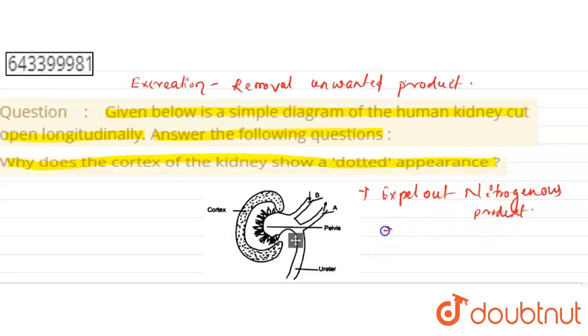And another function is it helps in osmoregulation. So here the question is, why does the cortex of the kidney show a dotted appearance?